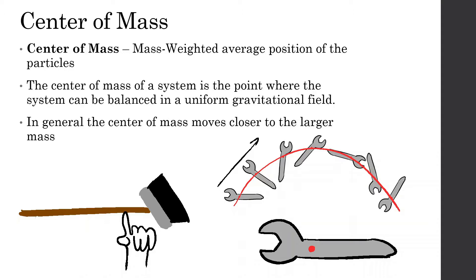Things you should know: objects can balance whenever you find the center of mass. The average mass position is where, if you were to place a point there, it would balance at that point. Also, wherever the center of mass is, things will rotate around that point. So this broomstick will rotate around this point, and if you were to flip this wrench, it would rotate around this point.